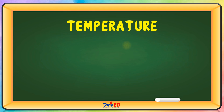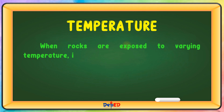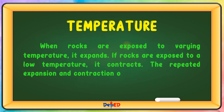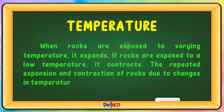Temperature. When rocks are exposed to varying temperatures, they expand. If rocks are exposed to a low temperature, they contract. The repeated expansion and contraction of rocks due to changes in temperature results in weathering.